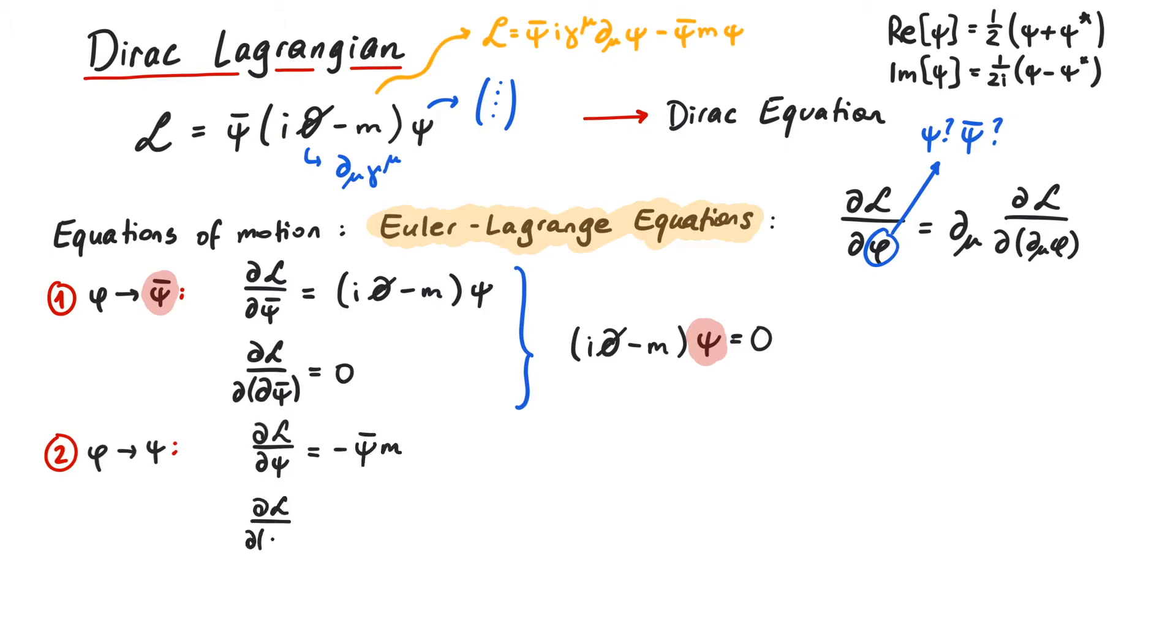The derivative of the Lagrangian with respect to psi is minus psi bar m. And the derivative with respect to the derivative of psi is psi bar i gamma mu. The Euler-Lagrange equations tell us that we need to differentiate this term once more.